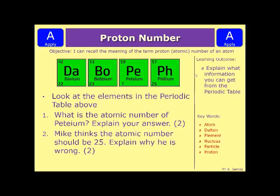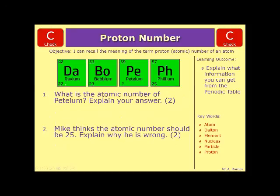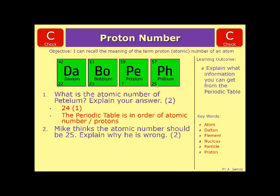Okay, if you had a go at that, let's see if you're right. So for the first question: what is the atomic number of petium? It's got to be 24, because it goes up in order of 22, 23, 24, 25. That proves that the periodic table is arranged in order of atomic number, not atomic mass. The explanation you're looking for is: the periodic table is in order of atomic number, or protons.